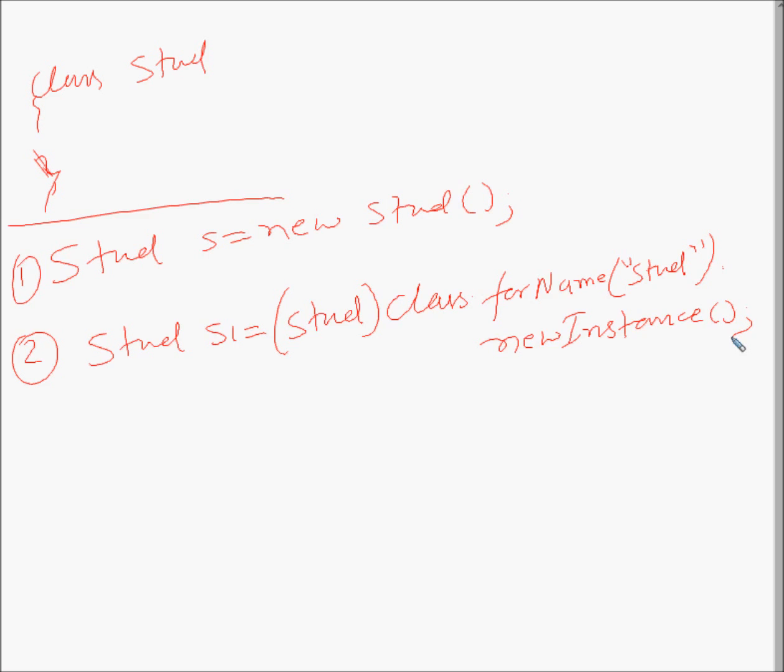There are some factory methods which will also help us create objects. Let's talk about the third one. Let's say you have a Student s - this is my s object. Already one object is there. I want to create another object, so I can do Student s2 = s.clone. So we've got another object now, right?